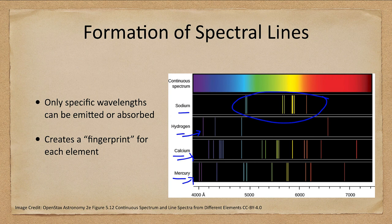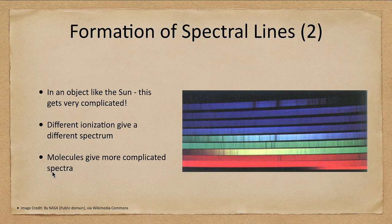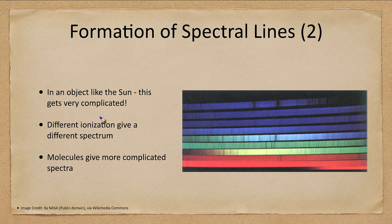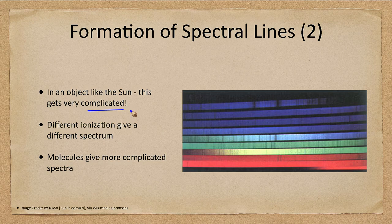Now in reality, this can get very complex. Because if we look at something like the sun, and here is an example of a solar spectrum, what we see is it gets really complicated because there are lots of elements there and all have their spectral lines. So if you don't have just one element, it's not quite as easy.